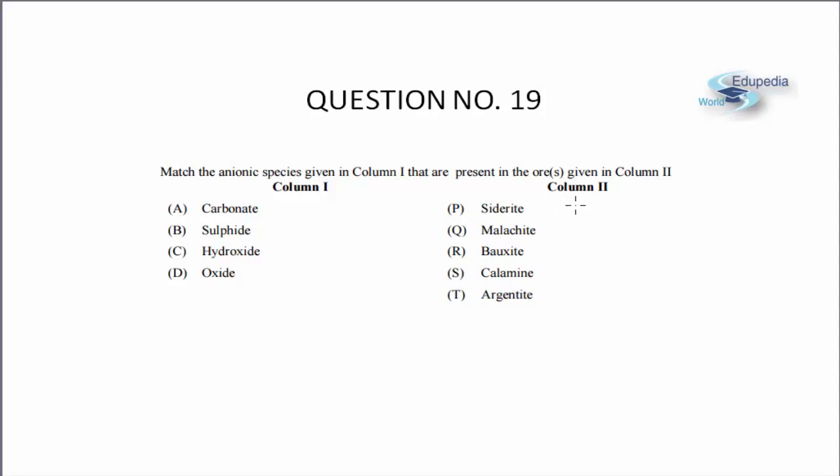So starting with siderite, it is FeCO3 that is ferrous carbonate. This is siderite. And then the next ore is malachite. Malachite as you all know is given in NCERT, it is CuCO3 copper carbonate dot Cu(OH)2. This is malachite.